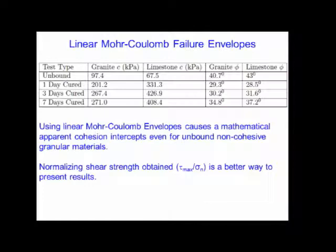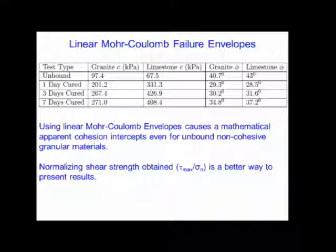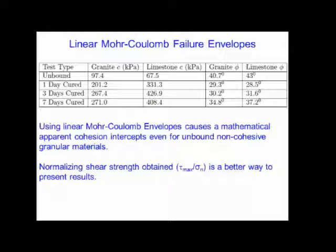The main reason I'm showing that plot is: if you look at the table values, we are getting some cohesion intercept even for unbound conditions, which should basically be zero. This is a mathematical error caused by the linear fit of the Mohr-Coulomb failure envelope. For the bonded condition, the question becomes: how much of the cohesion intercept is real cohesion and how much is mathematical error?